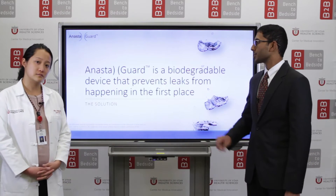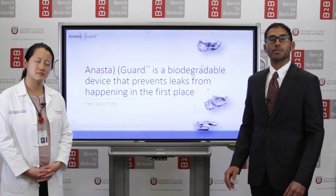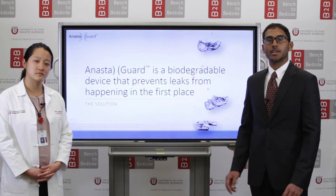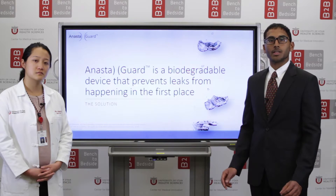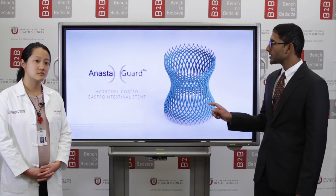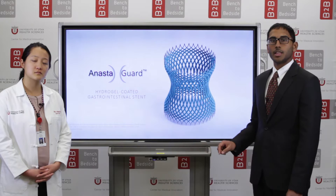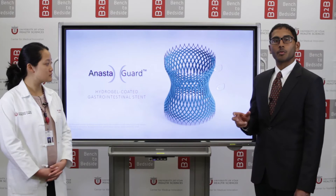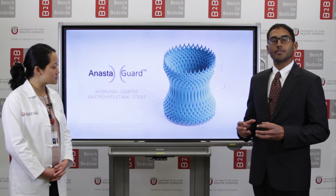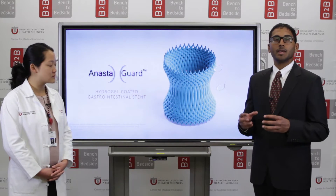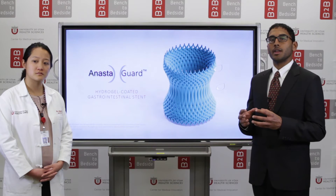To follow that bottom trajectory, Anastogard has come up with a solution that is a biodegradable device that prevents leaks from happening in the first place and thus prevents any downstream medical problems as well as economic costs. This is our device, which is a hydrogel-coated gastrointestinal stent. The proof of concept is shown here where water comes in contact with the device and the hydrogel swells, covering up the pores and transforming it into a covered stent, thus protecting it from an anastomotic leak.